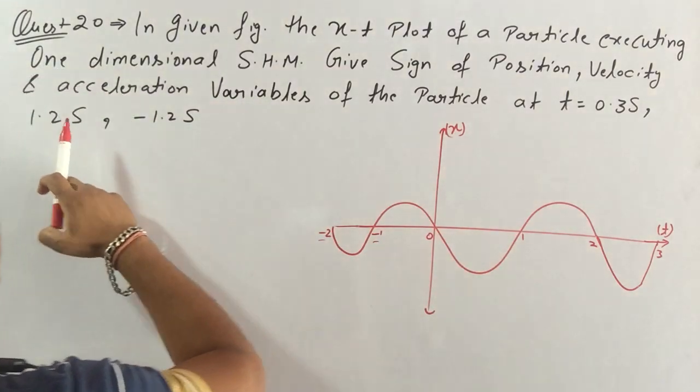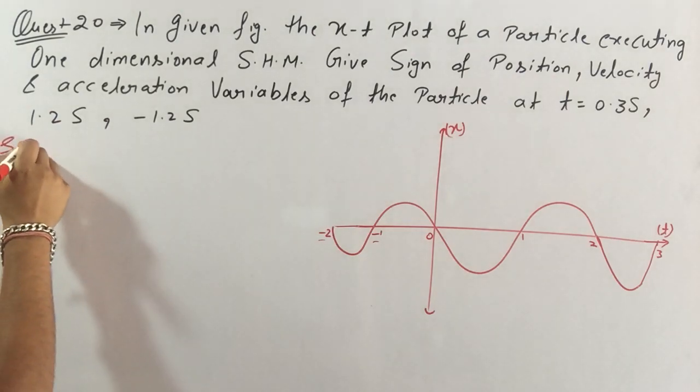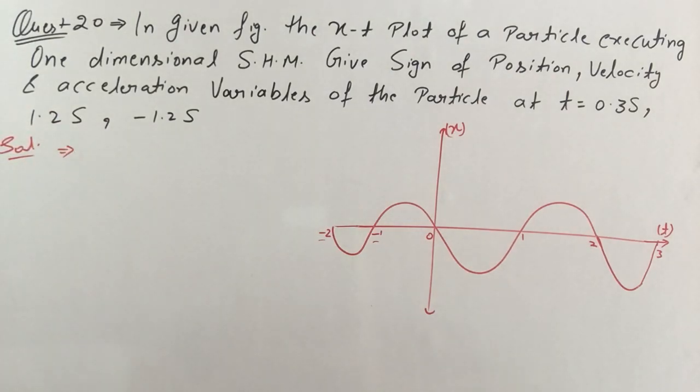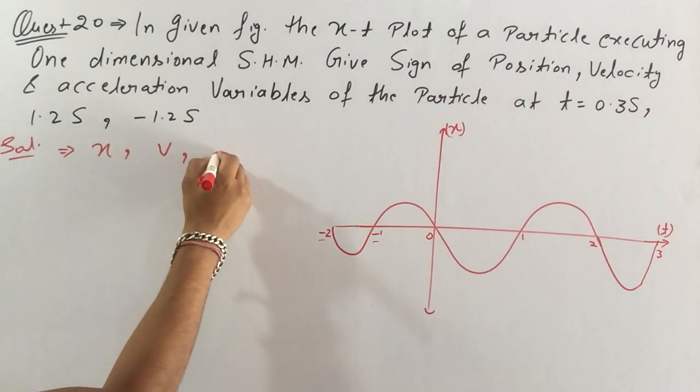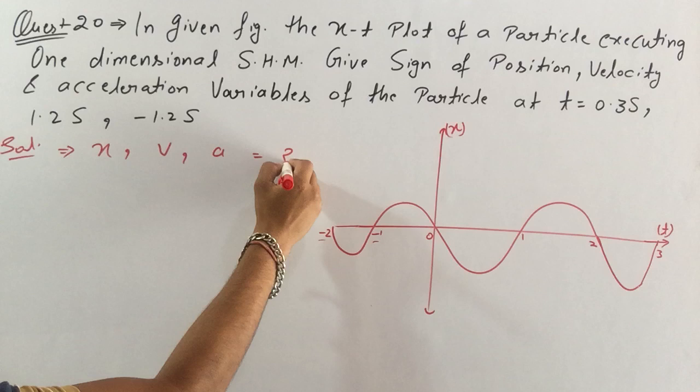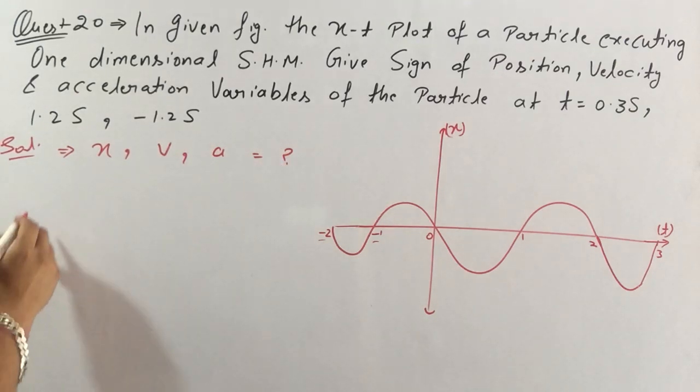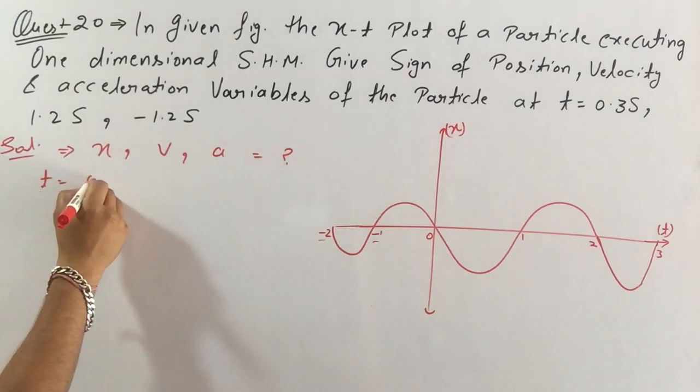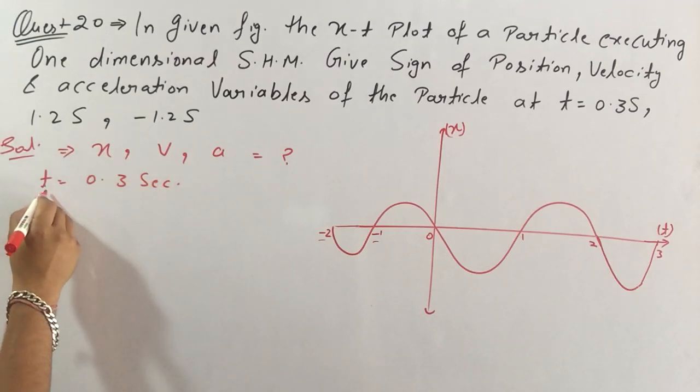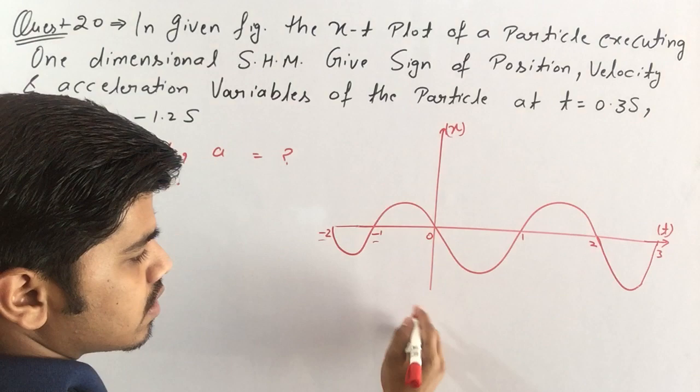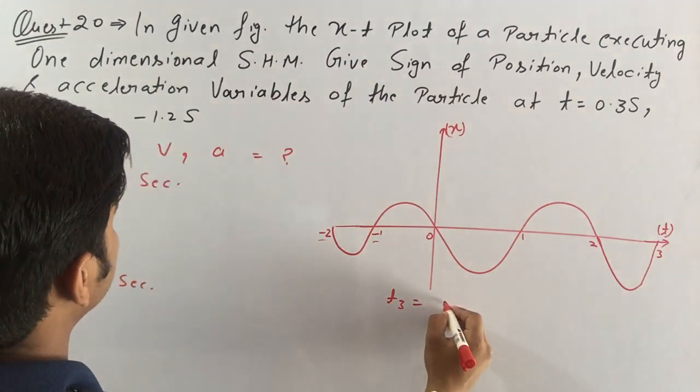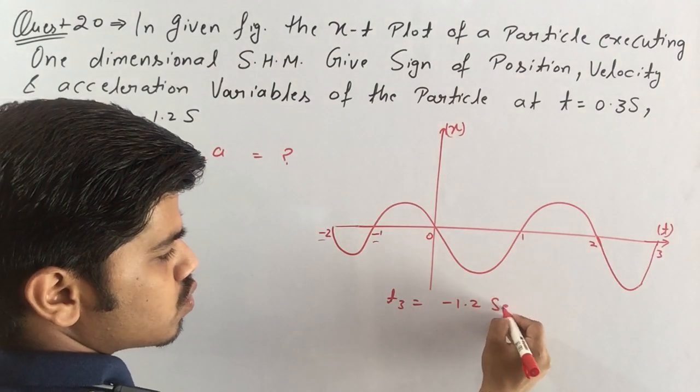Again we have to find position x, velocity and acceleration at time 0.3 second t1, t2 at 1.2 second, and t3 at minus 1.2 second.